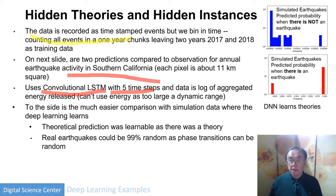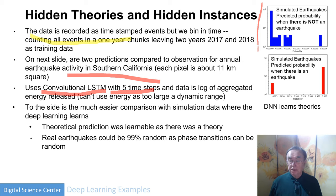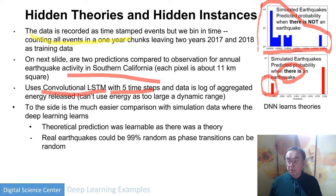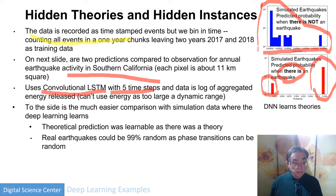We first applied this to a theoretical model and got perfect answers. I interpret that as: if there is a theory, then you can learn the theory. Looking at time intervals when there was no earthquake, the predicted probability is essentially always zero. When there is an earthquake, nearly all cases show probability near one. This is a log plot, so the results are quite clear. I'm pretty certain we will succeed as long as there is a theory behind earthquakes; if there's random noise with no underlying theory, it may not work.